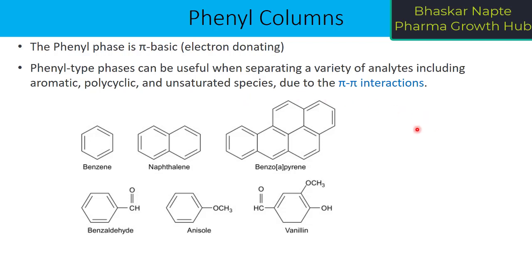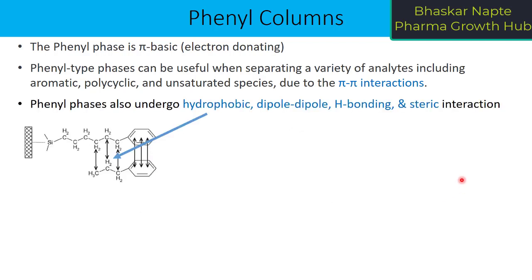If your phenyl column has pi bodies and your analyte also has pi bodies, the pi-pi interaction is very much possible — for example, in case of benzene or naphthalene. In addition to the pi-pi interaction, the phenyl column can also bring hydrophobic interaction because the phenyl ring gets connected onto the silica base support with the help of a hydrocarbon chain, which is hydrophobic in nature. So if your compound has a hydrophobic part, the alkyl chain also interacts with the hydrophobic chain present in the phenyl column.